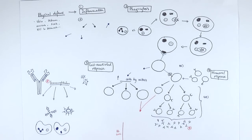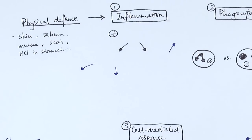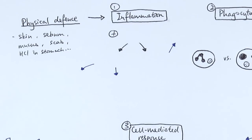Starting at the first stage — in the beginning we have the physical defences, our primary defences, which are things like our skin, the sebum on the surface of our skin, mucus in our airways, and if we have a wound we've got a scab over it. Also if pathogens are in our food, we've got the acid in our stomach to kill them.